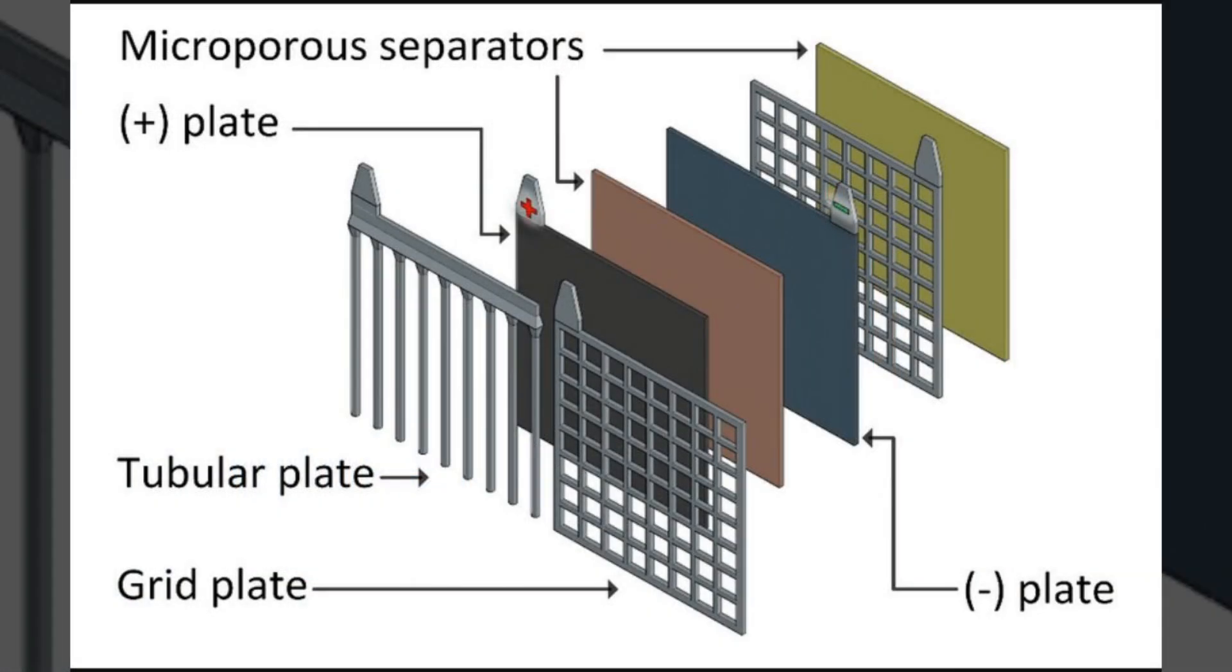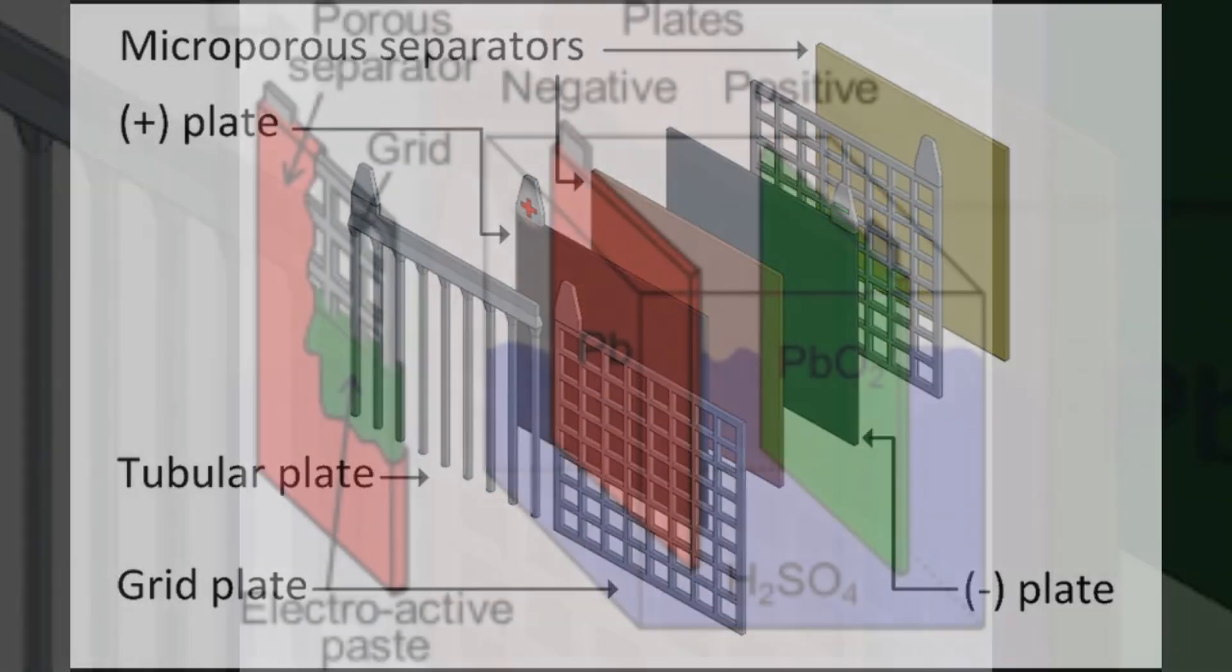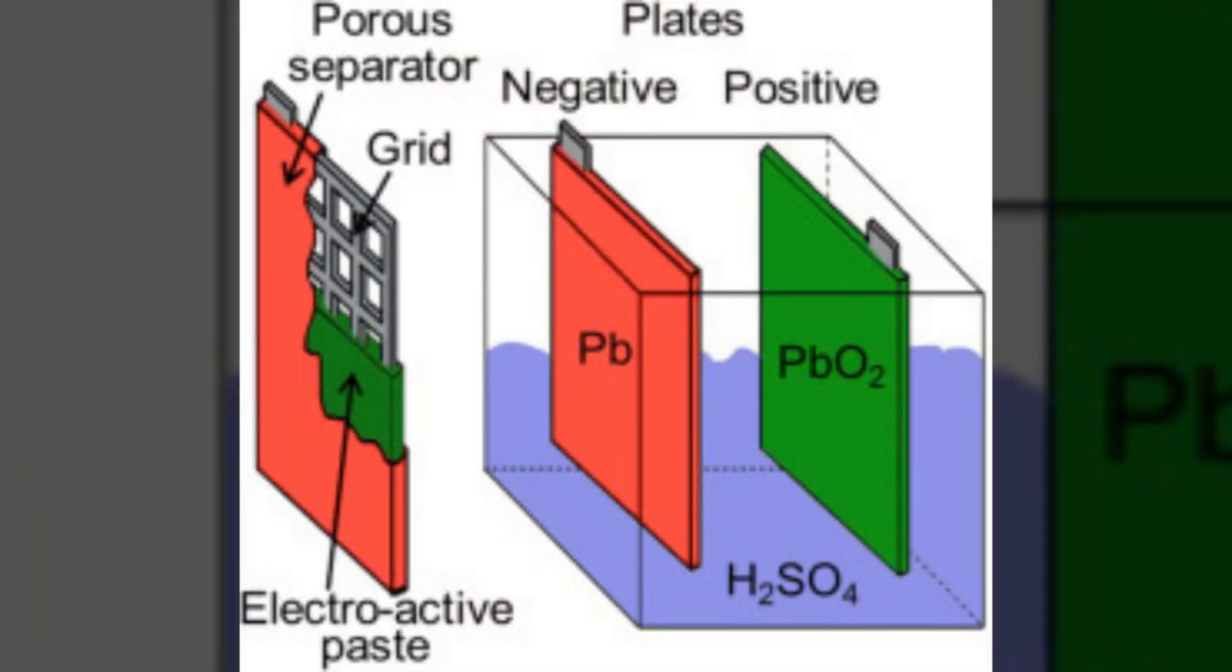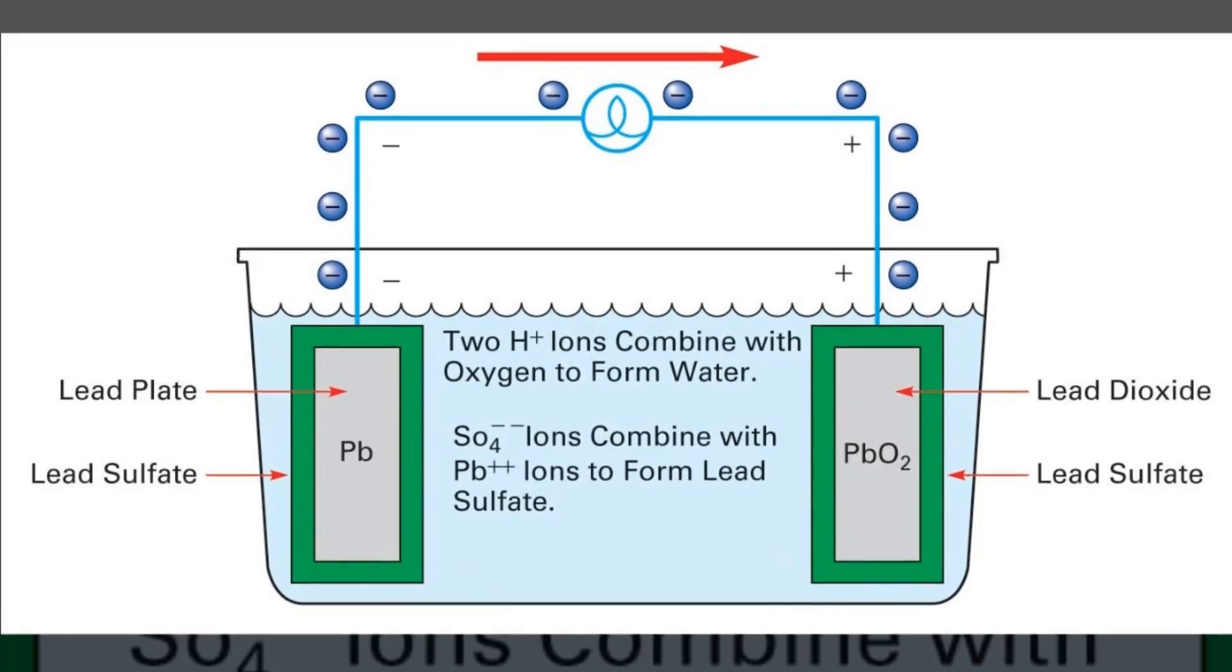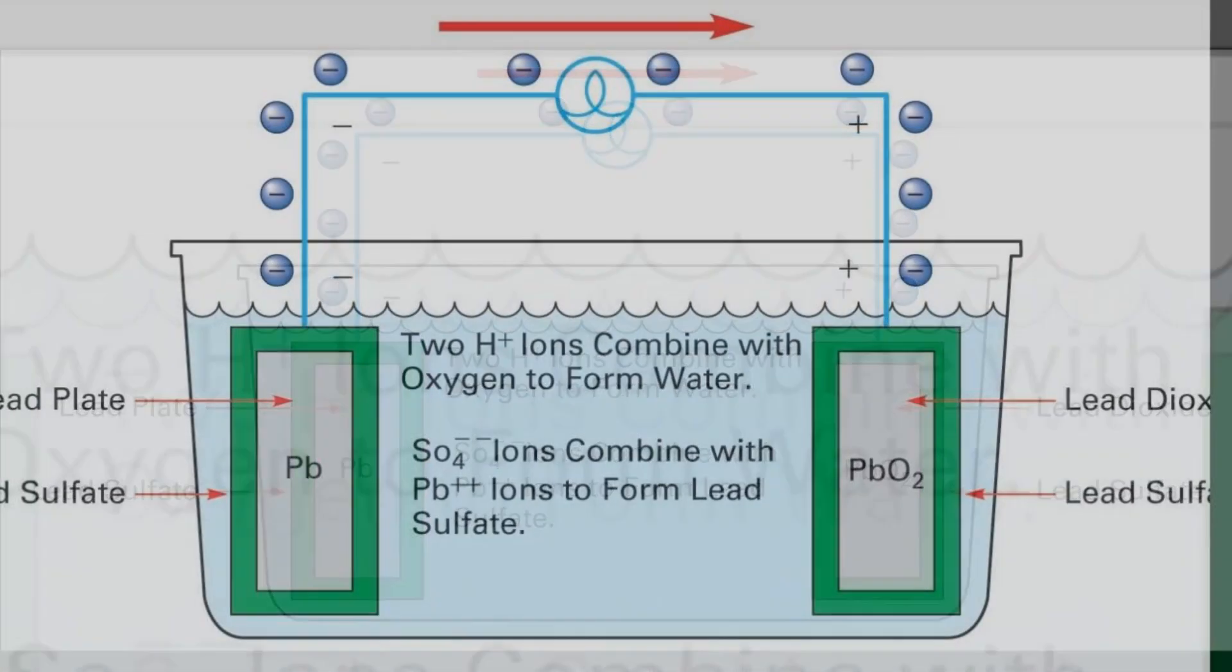The heart of a lead-acid battery is its cells. Each cell consists of two types of lead plates, one coated with lead dioxide and the other made of pure lead. These plates are immersed in an electrolyte solution made of sulfuric acid and water.